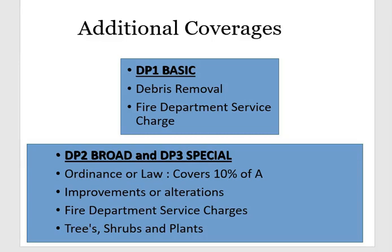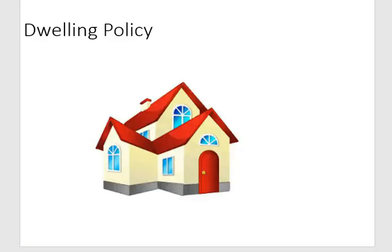Trees, shrubs, and plants are also additional coverages in DP2 and DP3. In a fire, there's often damage to trees, shrubs, and plants, and those are typically not covered under a DP1 but will be covered under DP2 and DP3. Those are your additional coverages — this pretty much covers the basics of a dwelling policy.